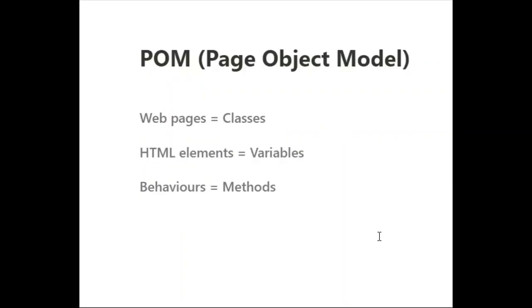Page Object Model is a test design pattern in which we represent web pages as classes, HTML elements on the web pages as variables, and the behavior of those HTML elements as methods. It is an easy way to keep your test scripts in a readable and easily accessible format.